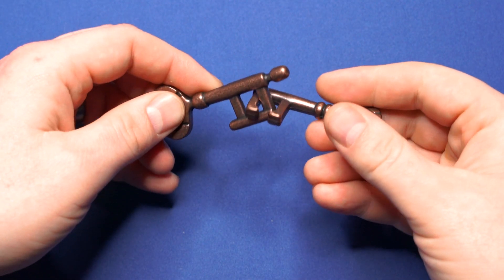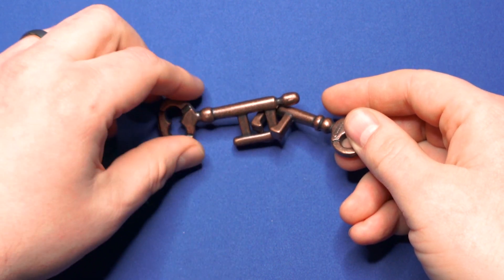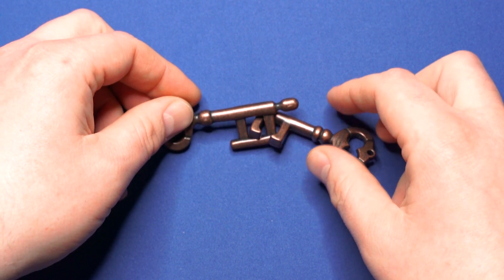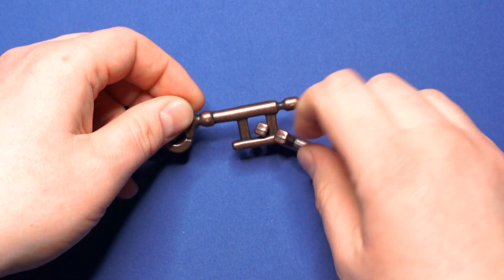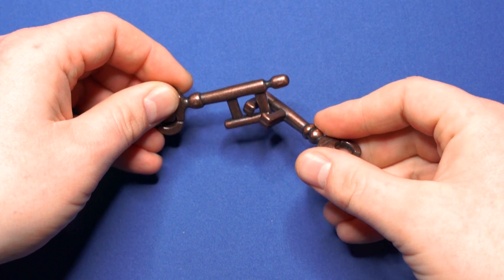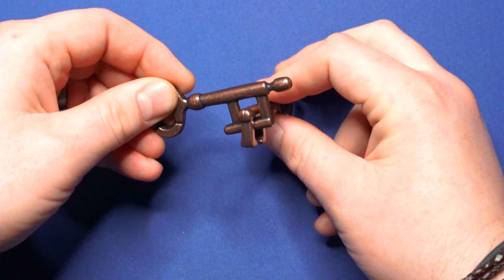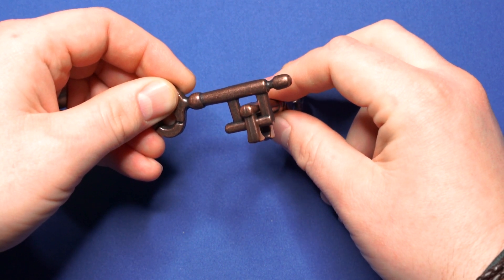Now to solve this puzzle you have to start in this position. You've got the solid key on this side, on the left, and the key that has a bit of a gap on the right. And you're going to turn it and then move like this. So you turn that key to the back.